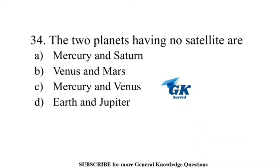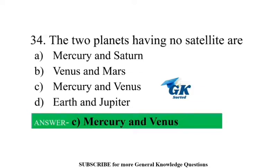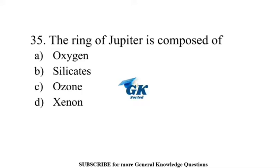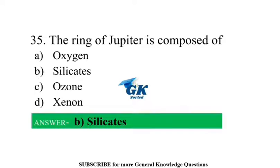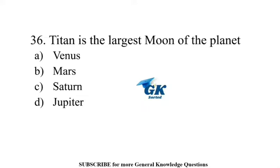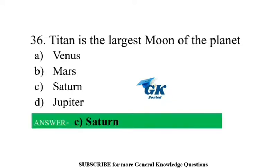The two planets having no satellite are Mercury and Venus. The ring of Jupiter is composed of silicates. Titan is the largest moon of the planet Saturn.